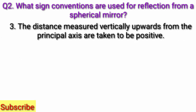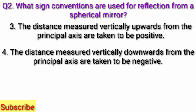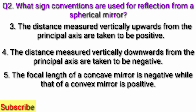The distance measured vertically upwards from the principal axis are taken to be positive. The distance measured vertically downwards from the principal axis are taken to be negative. The focal length of the concave mirror is negative, while that of the convex mirror is positive.